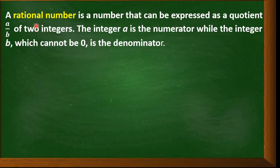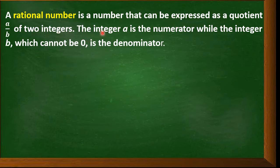Before we go on with changing fraction to decimal, let us try to understand first what is a rational number. A rational number is a number that can be expressed as quotient a over b of two integers. In other words, it is a number that can be written as a fraction. The integer a is the numerator while the integer b is the denominator, and b cannot be equal to zero because once the denominator is zero, it will become undefined.